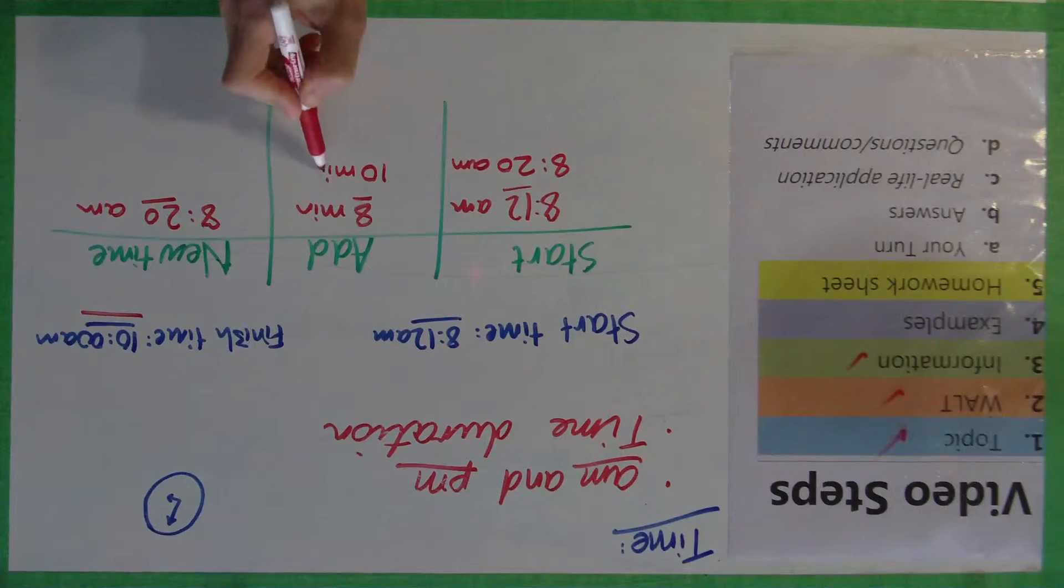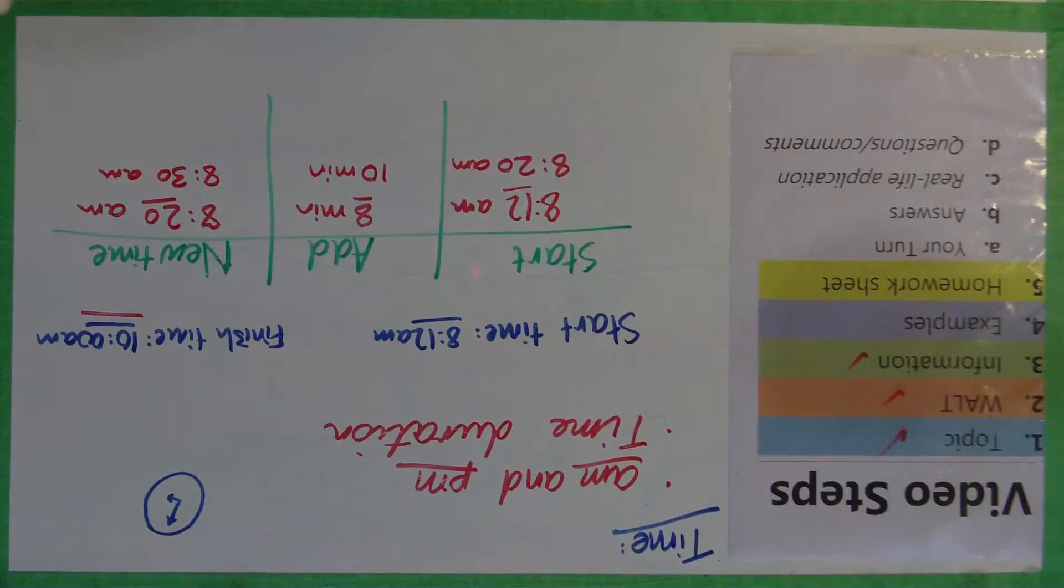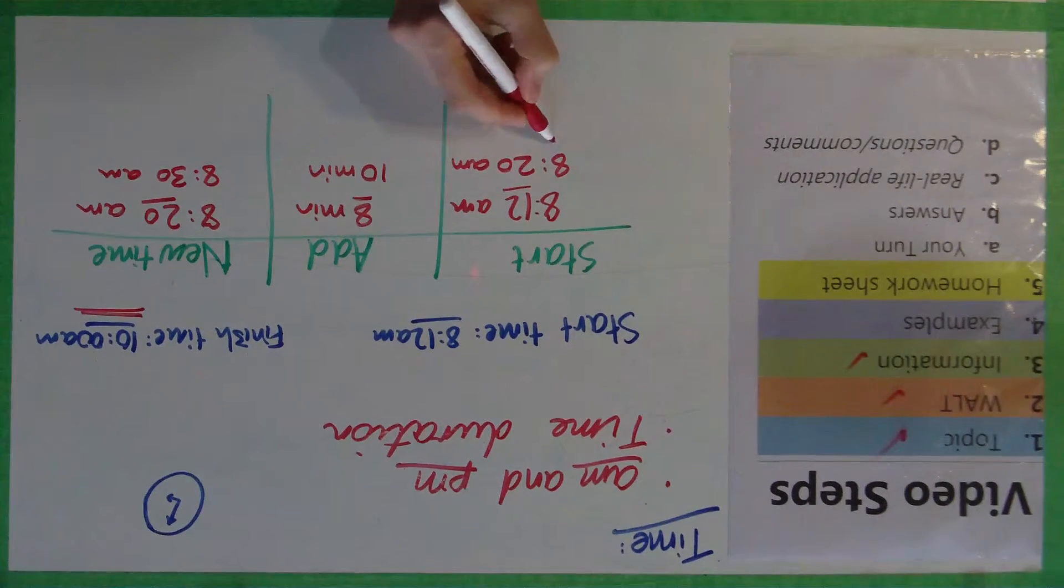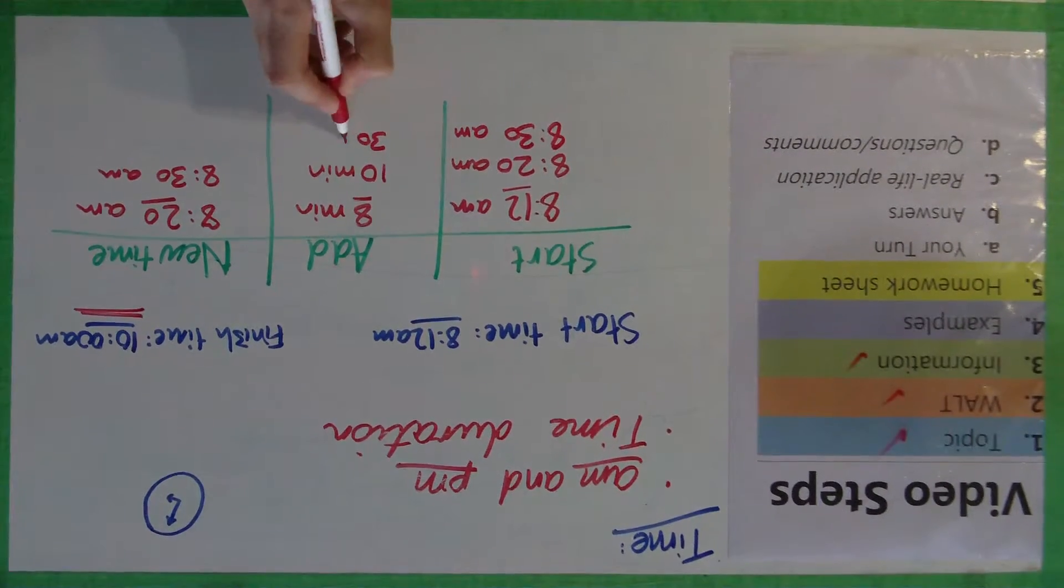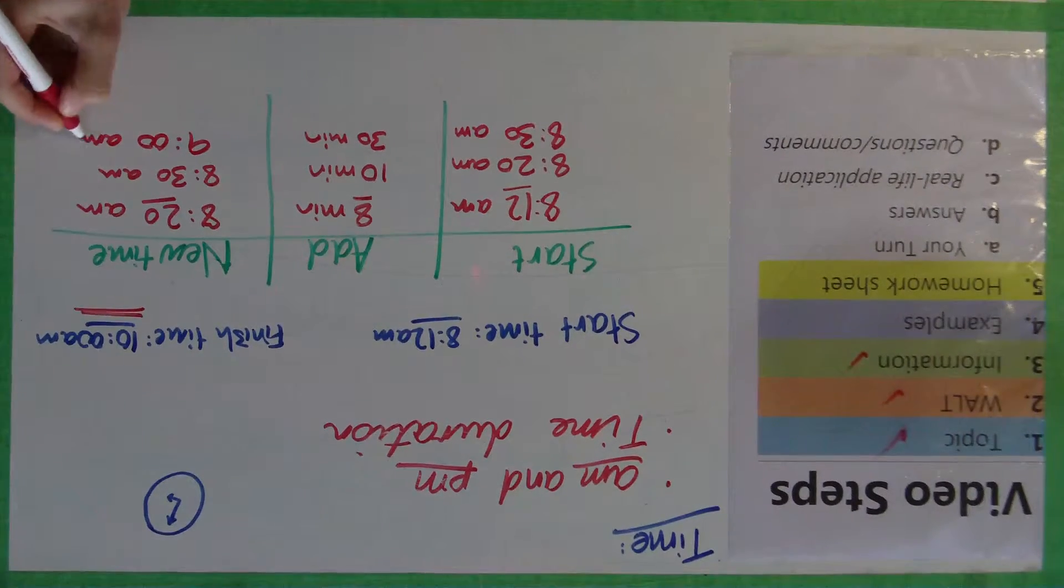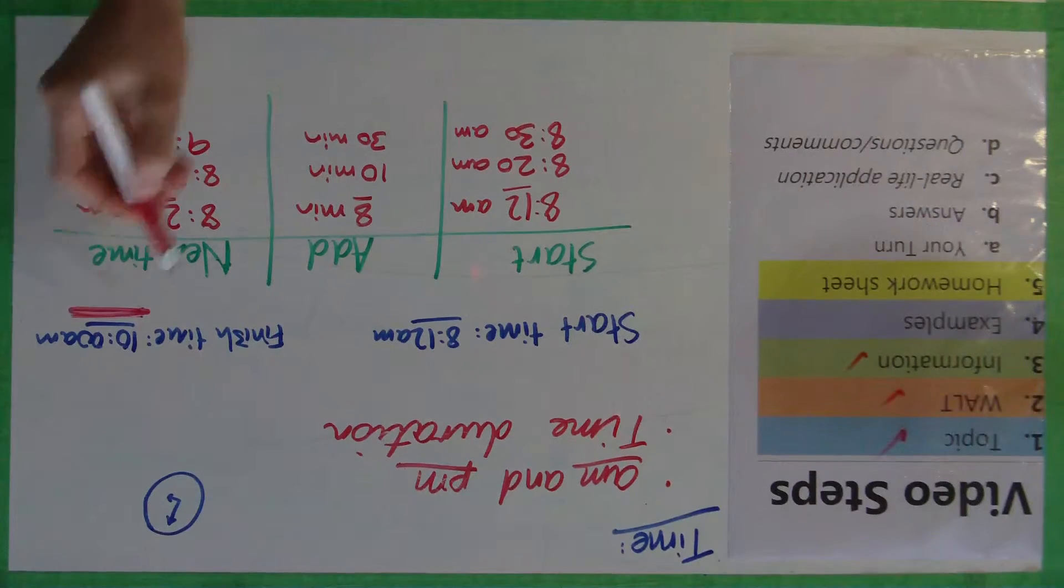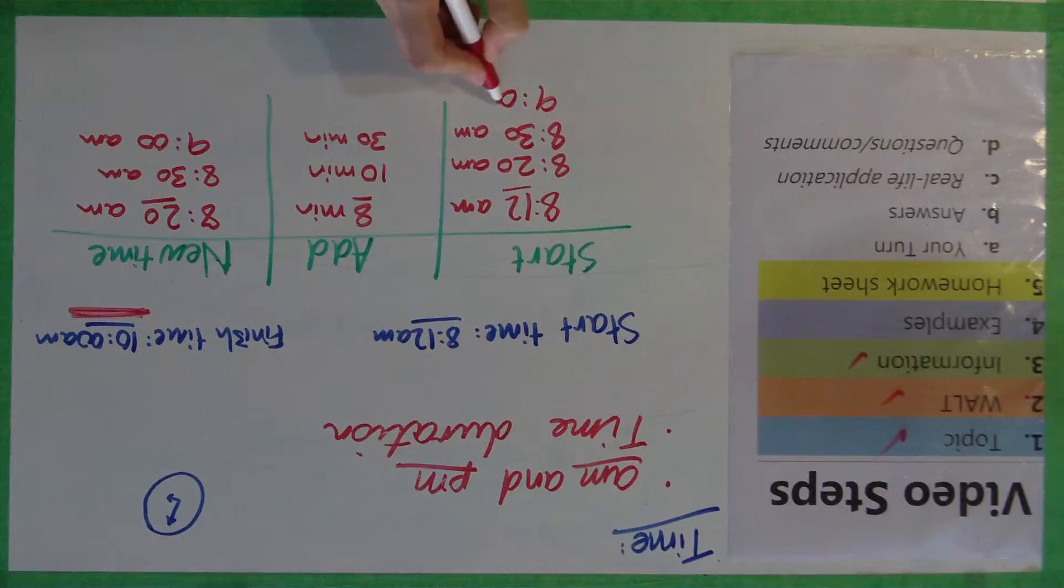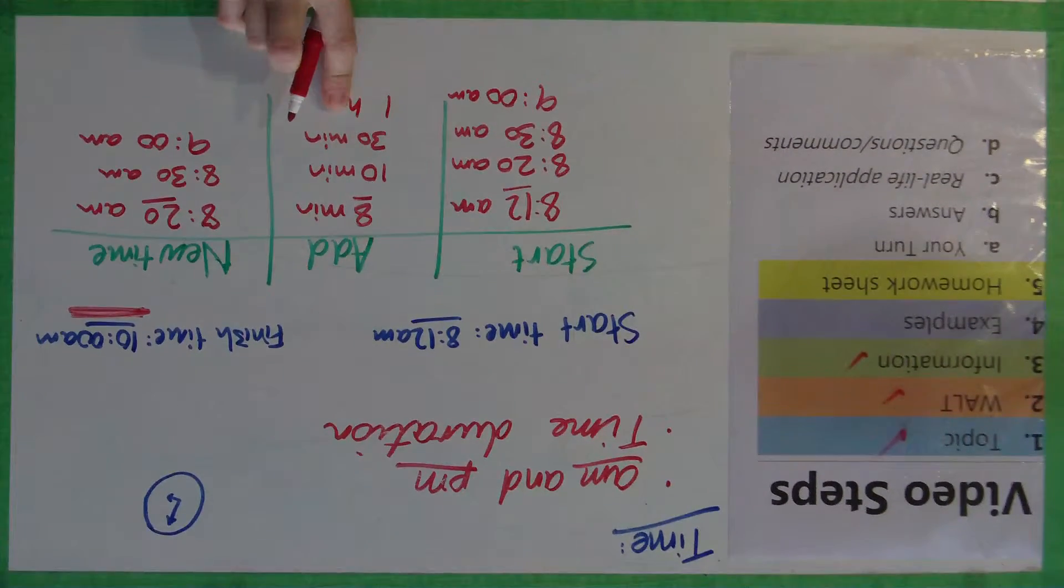I'm just going to add 10 minutes now. And it will become 8:30 a.m. Haven't reached 10 o'clock yet. Okay, well, I'm going to add another 30 minutes because I know it's going to reach 9 o'clock. 30 minutes after 8:30 will equal 9, or it will reach 9 o'clock, 9 a.m. And then I have to finish at 10 a.m. So I'm just going to go, well, 9 a.m.